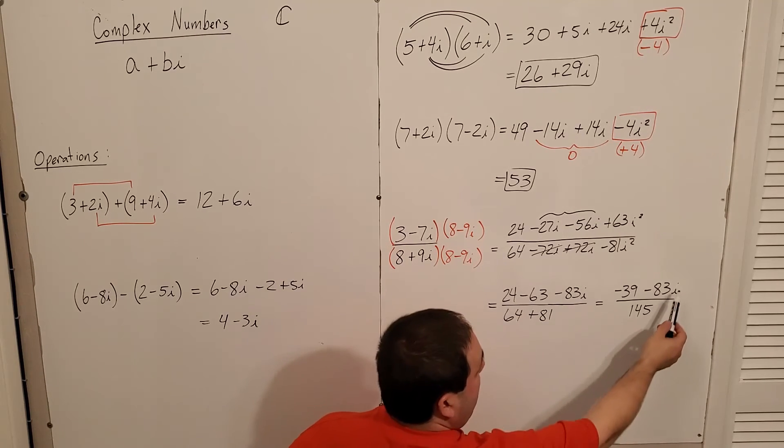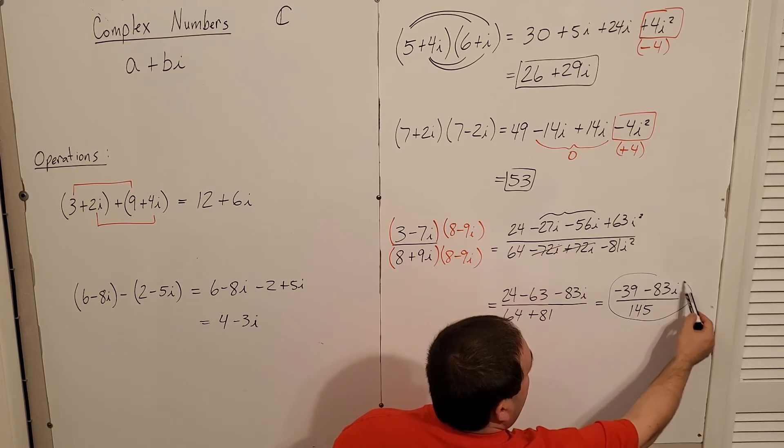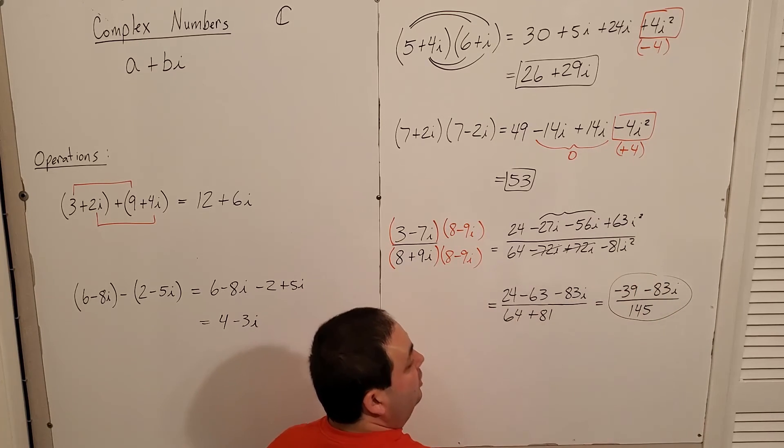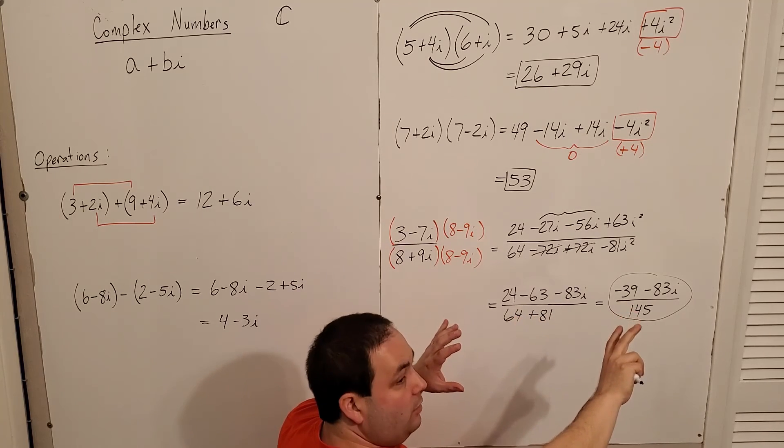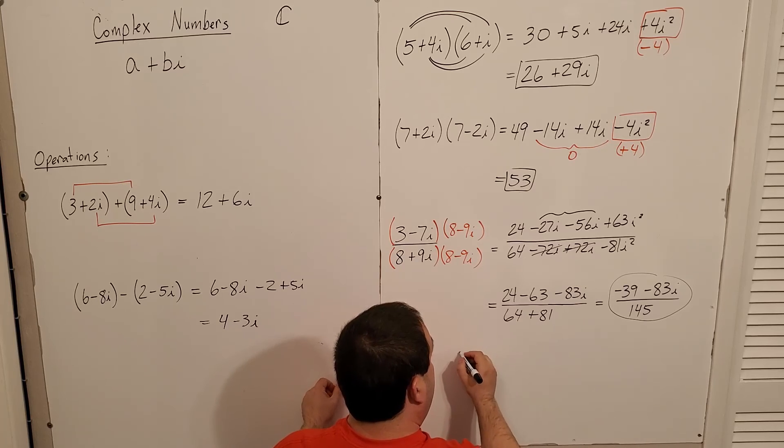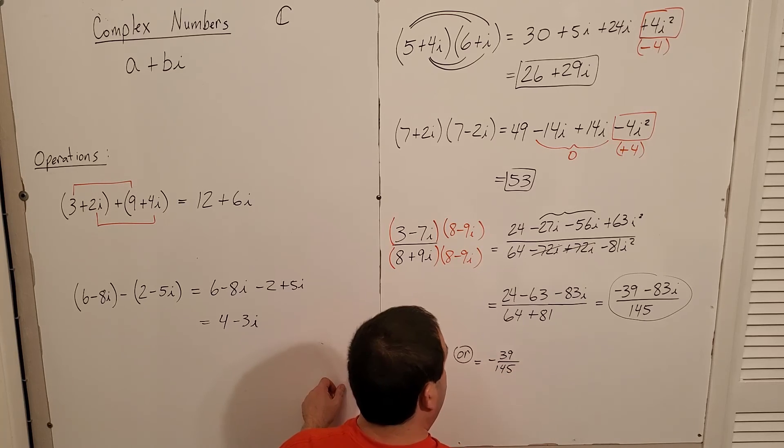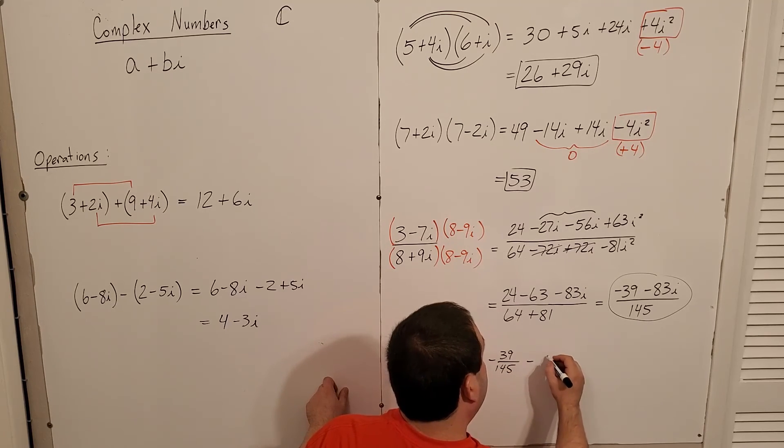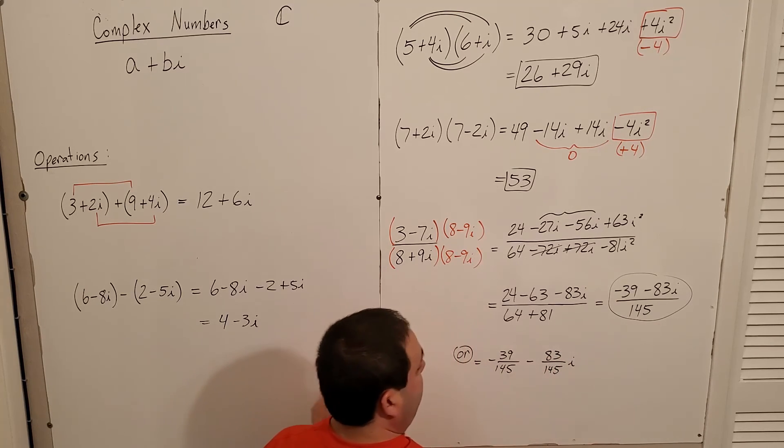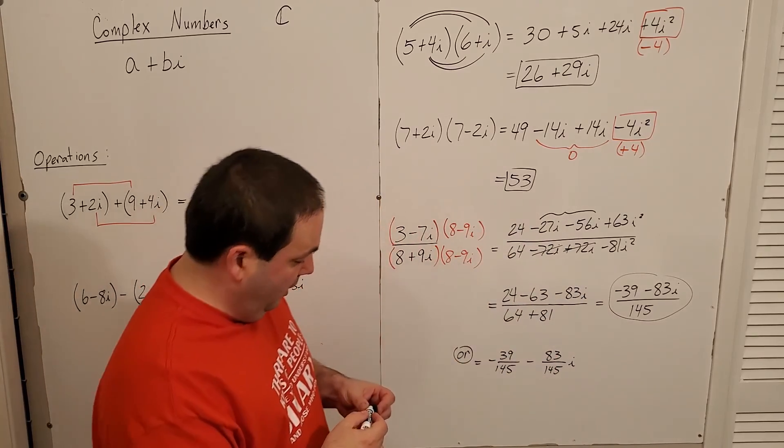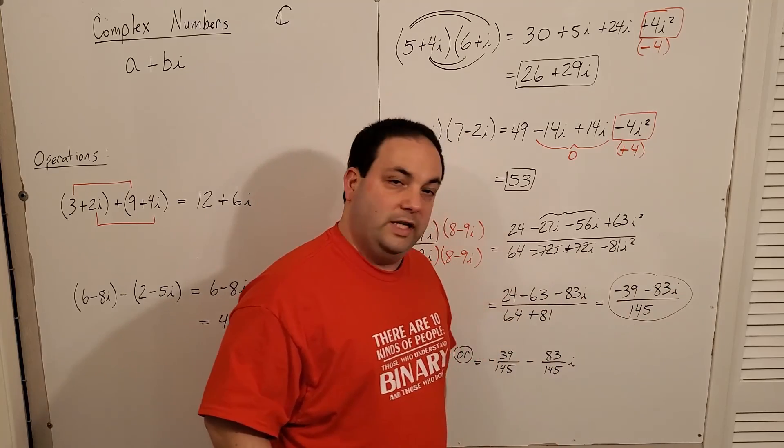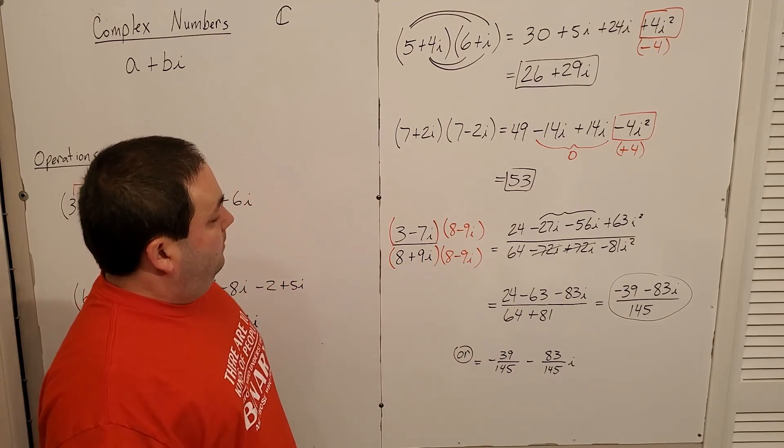A lot of times people will say it's okay to leave it like this. But just in case, don't forget this needs to be a complex number in the sense of it has a real part and an imaginary part. So you may also have to write it like negative 39 over 145 minus 83 over 145i, so that it has that real and imaginary separated part. All I'm doing is I'm distributing the denominator to each piece.